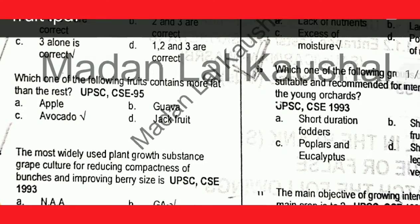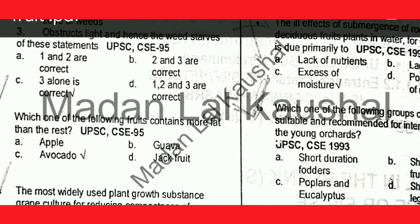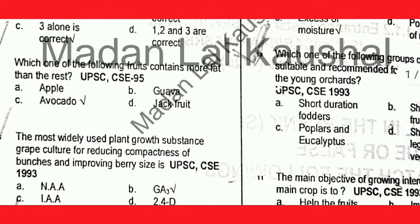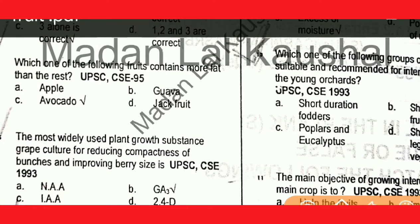Next question on intercropping in young orchards: which one of the following groups of crops are suitable and recommended for intercropping in young orchards? Short-duration low-growing vegetables are recommended. Option C is correct.